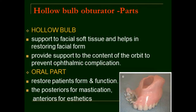The hollow bulb obturator has two main parts. First, the hollow bulb — the part of the prosthesis used to rehabilitate the defect, filling it and supporting facial soft tissue to restore facial form. It also provides support to the contents of the orbit to prevent ophthalmic complications. Second, the oral part — the remaining portion of the prosthesis, which includes false teeth, false palate and ridge, and restores the patient's form and function. For edentulous cases the oral part resembles a complete denture; for partially edentulous cases the design is comparable to a removable partial denture with a metal framework.